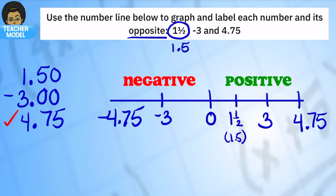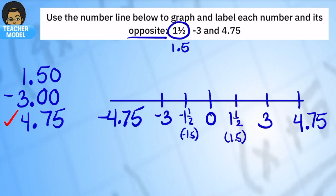And these are just approximations. So here's 1½, negative 1½ or negative 1.5, and now I've written all the numbers and their opposites onto the number line. Take 30 seconds and jot this example down in your notes.